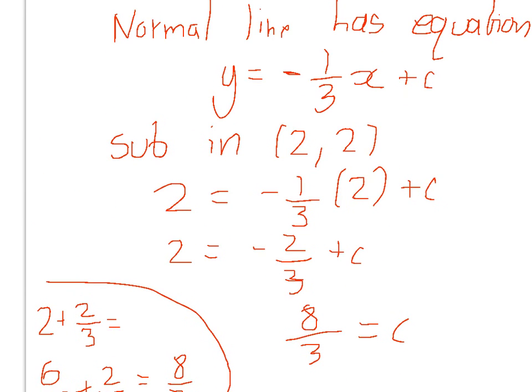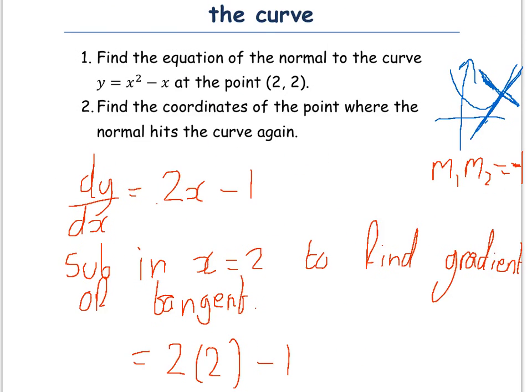That's part A completed. Part B says find the coordinates of the point where the normal hits the curve again. Obviously, if we look at the diagram, there's this point where it touches, but if we continue both bits of the graph, eventually they're going to intersect again. We want to find this point where they intersect again. So we now know two equations, and we're going to use simultaneous equations to find the other value.